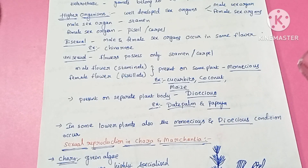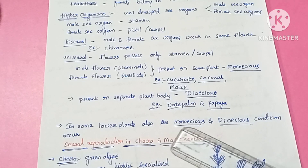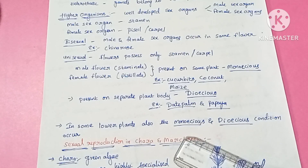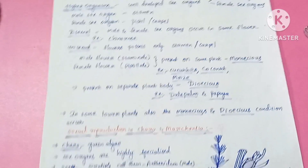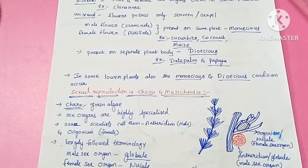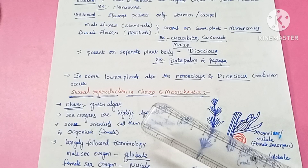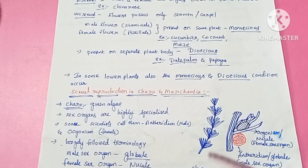In some lower plants also, the monoecious and dioecious conditions occur. Examples of lower plants showing these conditions are Chara and Marchantia.